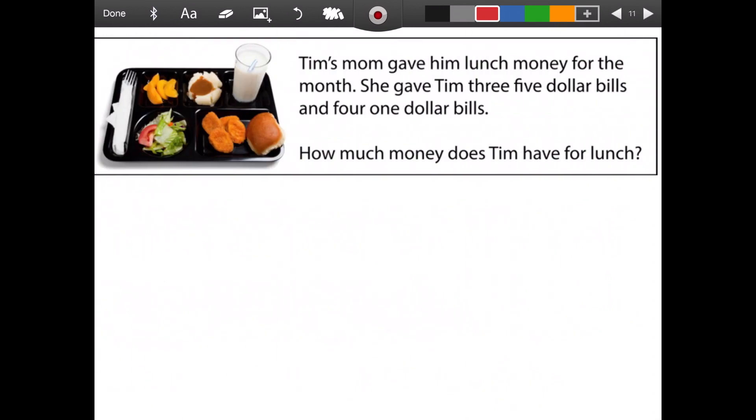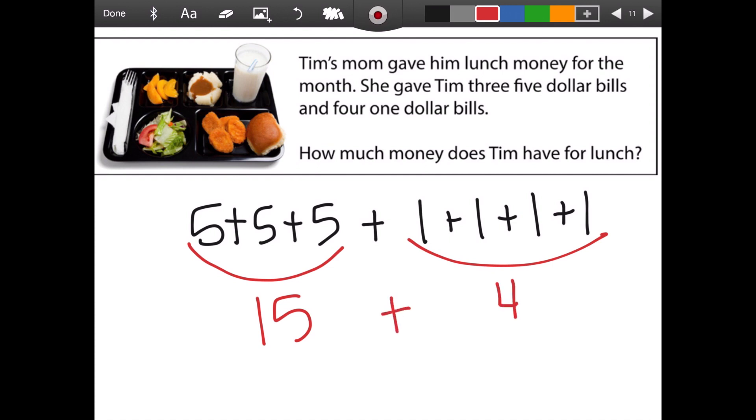Okay. Let's try one more. Tim's mom gave him lunch money for the month. She gave Tim three $5 bills and four $1 bills. How much money does Tim have for lunch? So again, it was three $5 bills. So one, two, three, four. How much money does Tim have for lunch? On this group, 5, 10, 15. And this group is four. 15 plus four equals 19. So how much money does Tim have for lunch? He has $19.